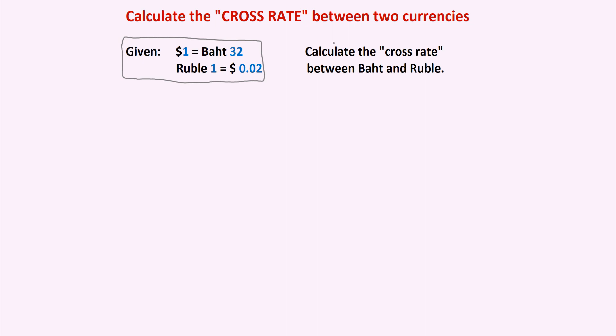The domestic currency is the US dollar, but we are looking for the implied exchange rate, which is what the cross rate means, between two foreign currencies, the Thai baht and the Russian ruble.